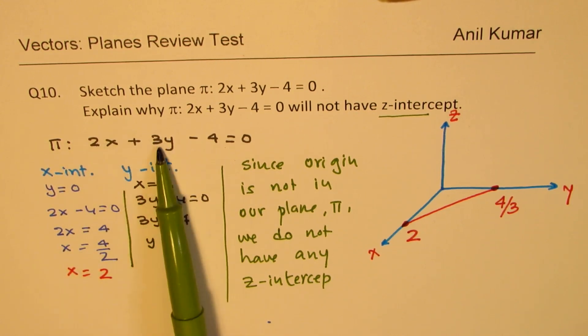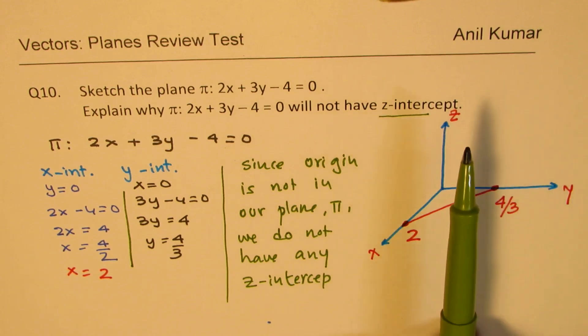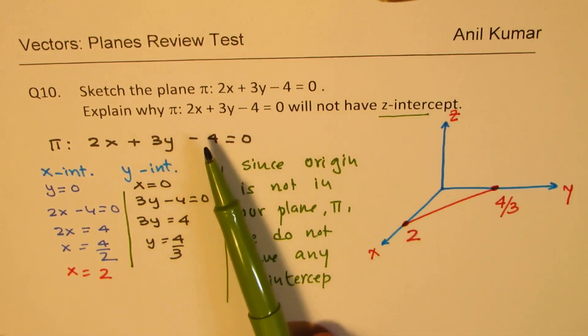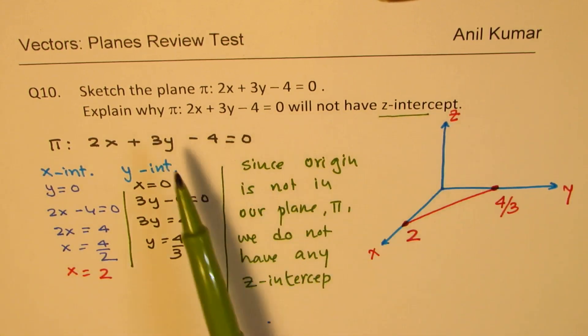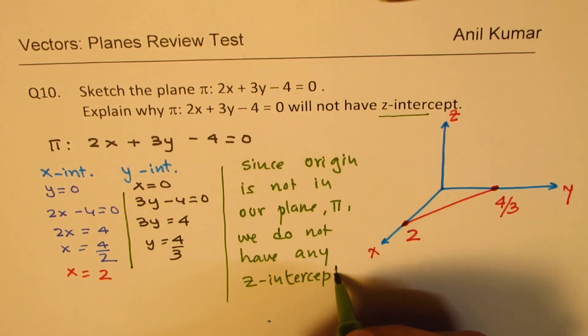And if I put this 0 and get z, it is not possible. In this case, it is not possible. It could be there if origin was a part of our plane, which is not the case.